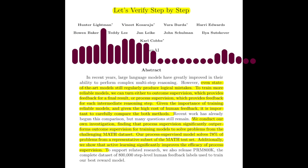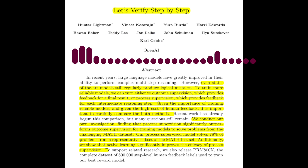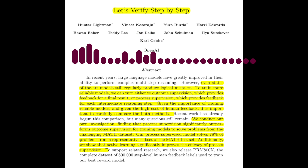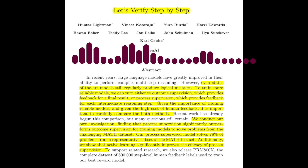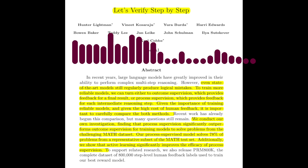The paper emphasizes the alignment implications of process supervision. How does this approach contribute to the development of more aligned AI systems? Process supervision promotes the development of AI systems that reason in a more human-like and interpretable manner. It directly rewards models for following a human-endorsed chain of thought, reducing the risk of misalignment that can arise from solely focusing on outcomes.